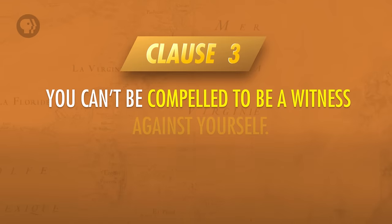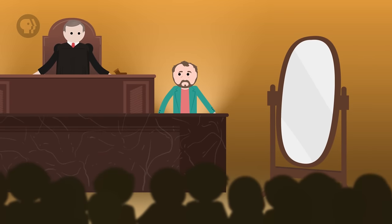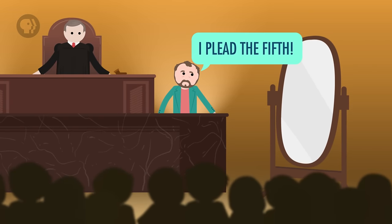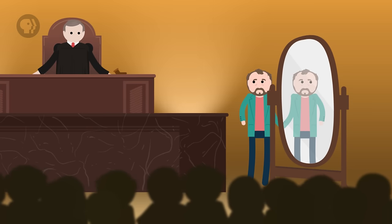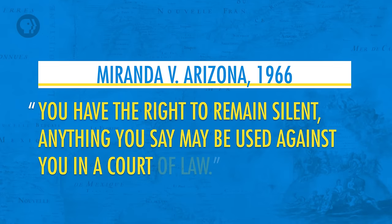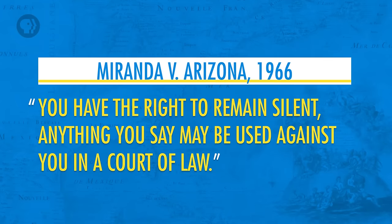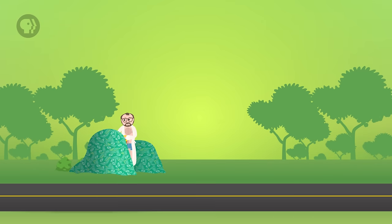The next clause — saying you can't be compelled to be a witness against yourself — is the most important one in the way we think about due process. This is the protection against self-incrimination, and it's what we mean when someone pleads the fifth. The idea that you can't be compelled to confess your own guilt is the basis of the famous first sentence in every arrest you see on TV: 'You have the right to remain silent. Anything you say may be used against you in a court of law.' This warning comes from the 1966 case Miranda v. Arizona. The last clause is the just compensation clause — if the state takes away your property, say to build a freeway through your front yard, they have to pay you for it. This is the basis for what's called eminent domain.